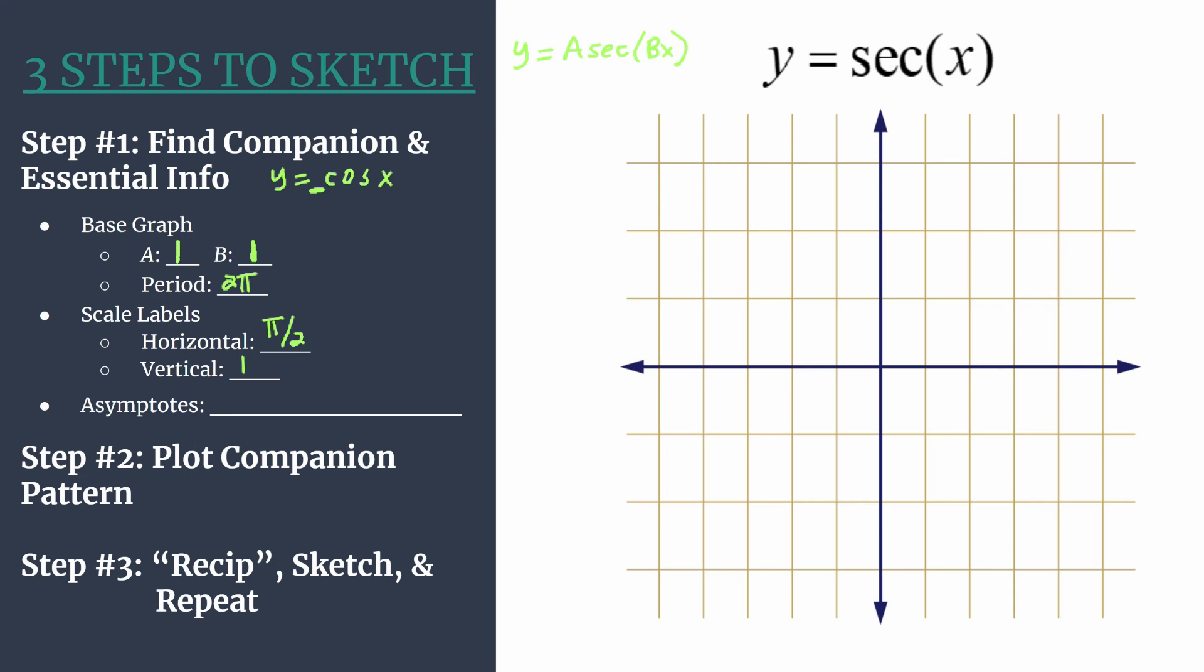Okay so that's all the information we'll use for our companion graph and that's what we're going to plot in step two. So let's go ahead and label our scale or our axes.